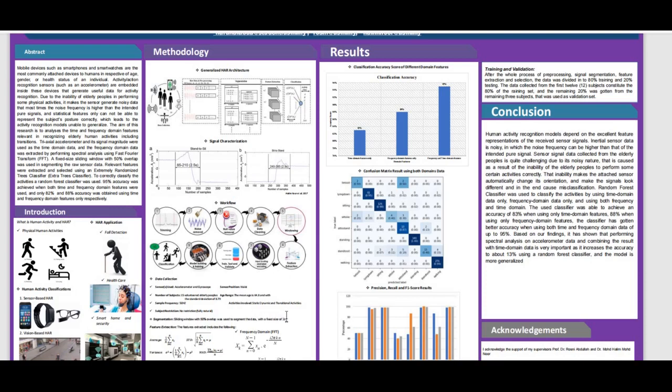Activities involve static, dynamic, and transitions. Static activity is like standing, sitting, or lying down, while dynamic activity includes running, walking, and things like that. Transition is activity in between either of those. For segmentation, we make use of sliding window with 50% overlap that segments the data with a fixed size of 2 seconds.